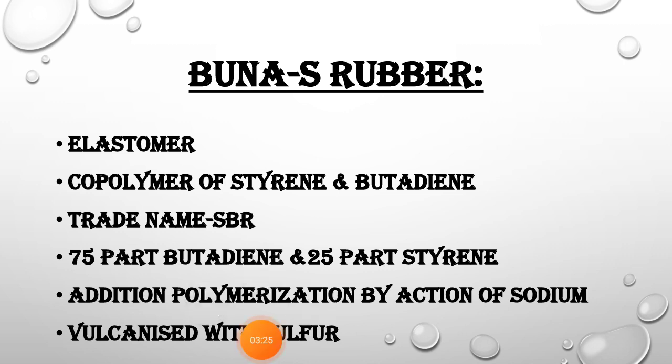Buna S is superior to natural rubber with regard to its mechanical strength and it has abrasion resistance. So it is used in the tire industry — for the tires we use in our vehicles.